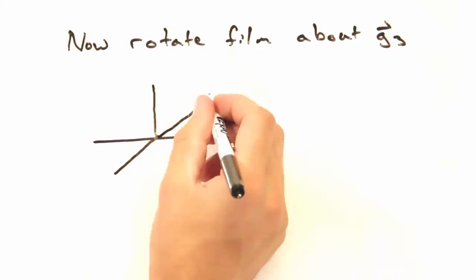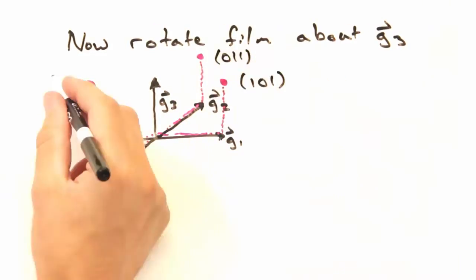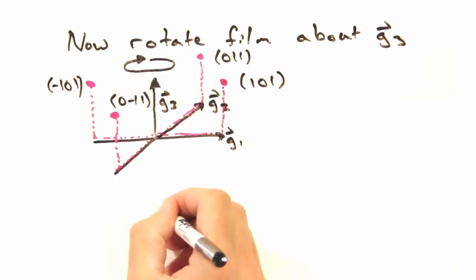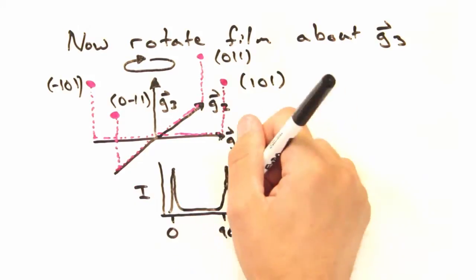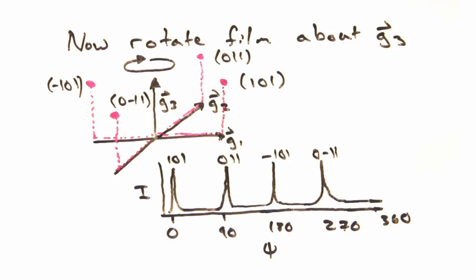Then, as we rotate the sample, the reciprocal points cross into the delta K vector, and we get reflections every 90 degrees for the 101, 011, minus 101, and the 0 minus 11 reflections respectively. Indeed.